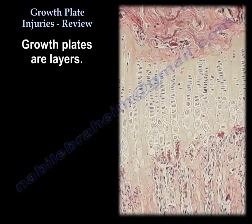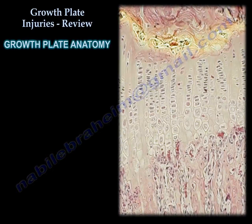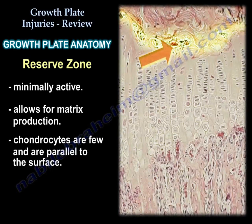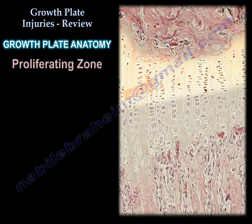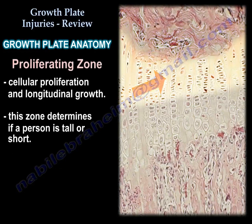Growth plates are layers. The reserve zone is minimally active and allows for matrix production. The chondrocytes are few and lie parallel to the surface. The proliferative zone is where cellular proliferation and longitudinal growth occurs. This zone determines if the person will be tall or short.